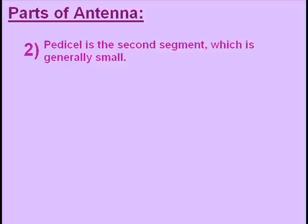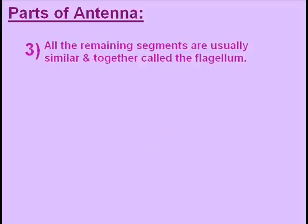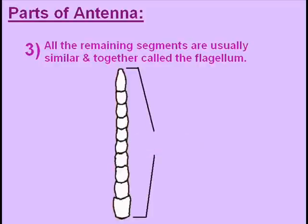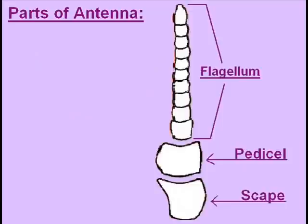The second part of the antenna is pedicel. Pedicel is the second segment, which is generally smaller than the scape. The third part is flagellum — all remaining parts other than pedicel and scape are usually similar and together called the flagellum. These are all three parts of an antenna: first scape, then pedicel, then flagellum.